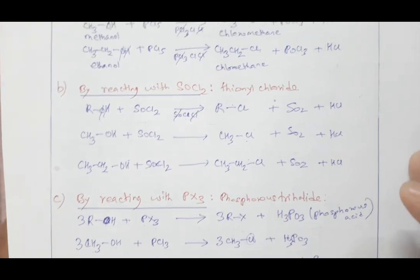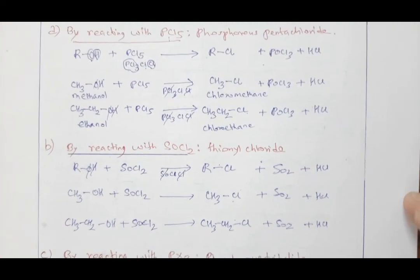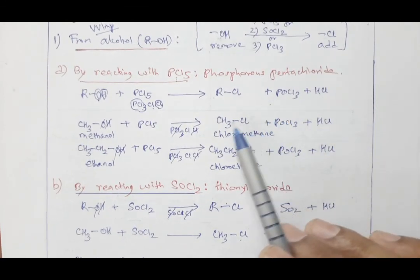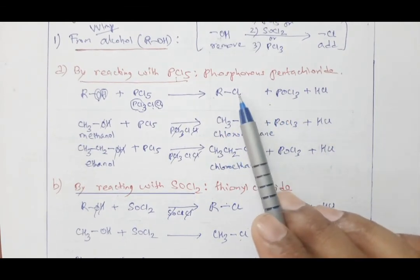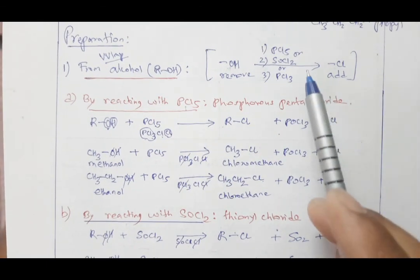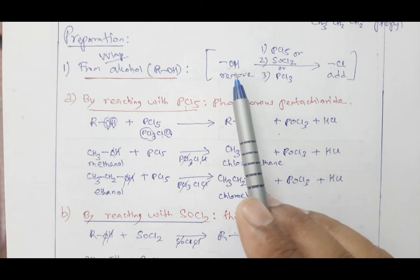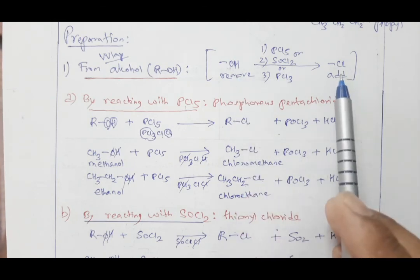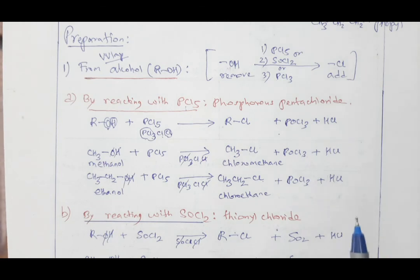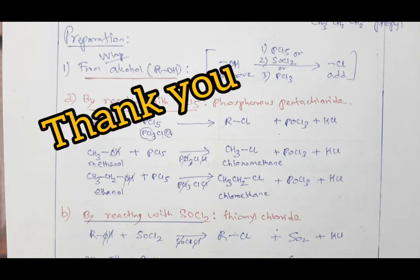With this, we complete the first preparation of monohalohydrocarbon (alkyl halide) from alcohol. The main trick to remember: if you want to remove OH and introduce a halogen, use PCl5, SOCl2, or PX3. In my next video we will learn more preparations of alkyl halide.